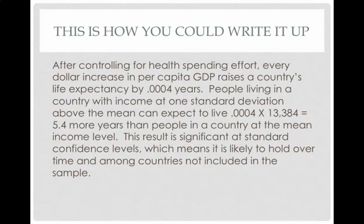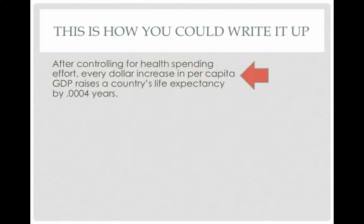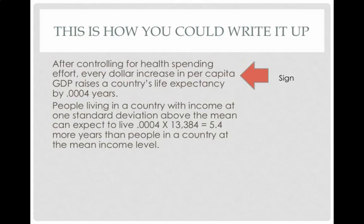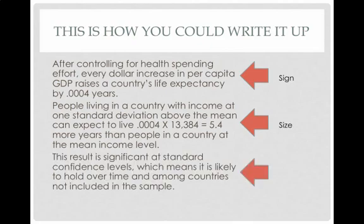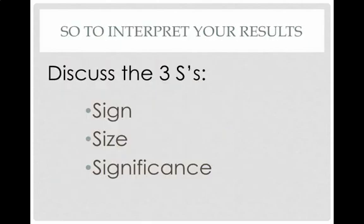Here's how you could write it up: 'After controlling for health spending effort, every dollar increase in per capita GDP raises a country's life expectancy by 0.0004 years. People living in a country with income at one standard deviation above the mean can expect to live 5.4 more years than people in a country at the mean income level. This result is significant at standard confidence levels, meaning it is likely to hold over time and among countries not included in the sample.' That covers sign (positive relationship), size (5.4 years), and statistical significance.